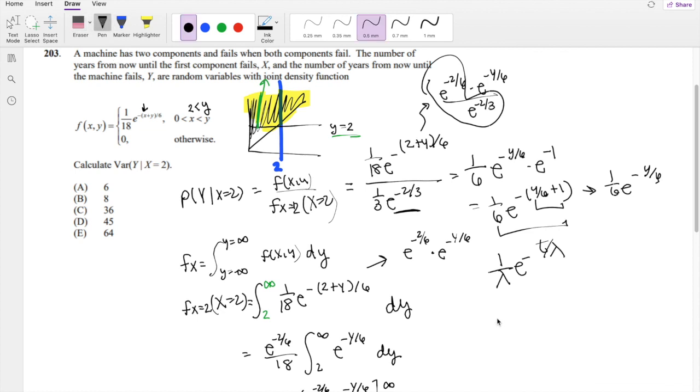Using our exponential knowledge that we have, we know that variance equals lambda squared, where in our case lambda equals 6. So our variance is 6 squared, or 36, which is our answer C.